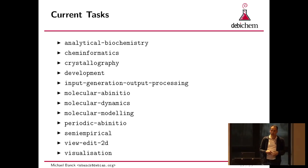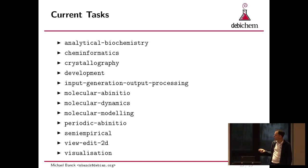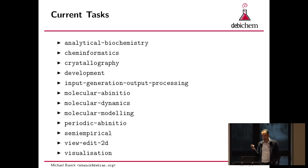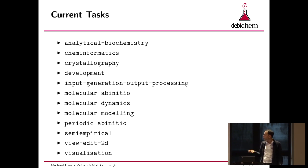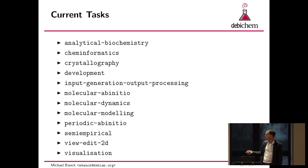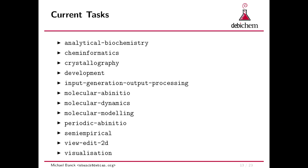As an introduction to what DebiChem does these days — these are the tasks, which Andreas talked about earlier. We split it up more fine-grained now; we have 12 tasks. We have crystallography and analytical biochemistry, which is what Rosconi is mostly doing. I'm mostly working on molecular ab initio, molecular dynamics, molecular modeling, and periodic ab initio stuff. And then there are lots of packages which produce or handle input-output.